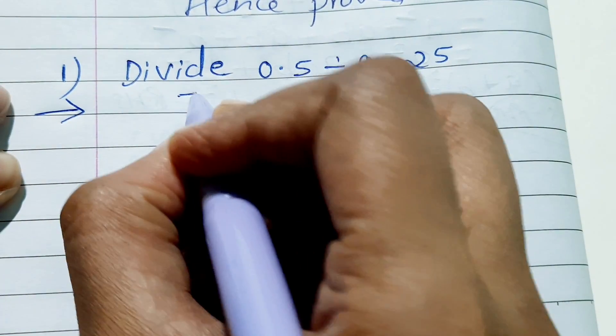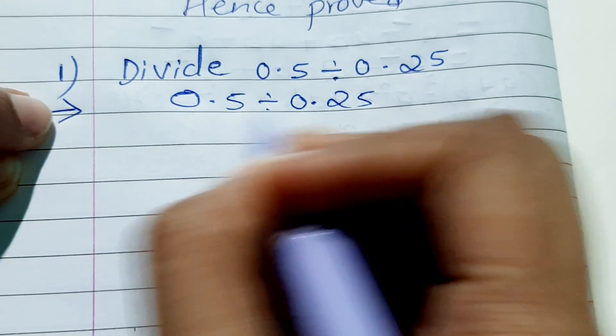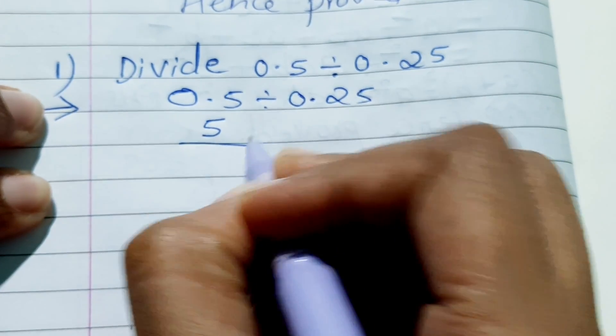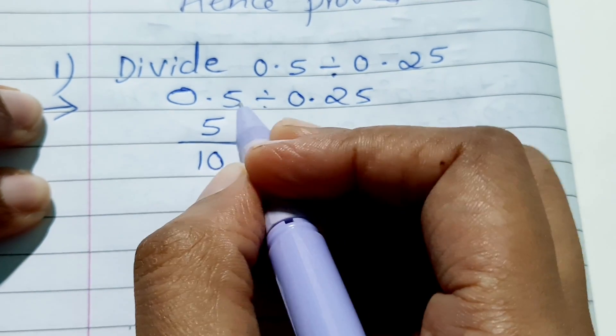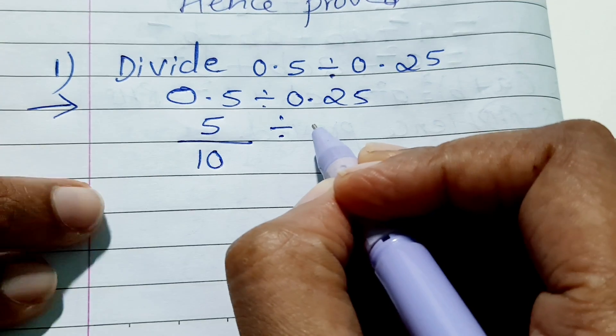First, you'll have to write down 0.5 divide by 0.25. So this is 5 upon 10, because the decimal is in the first place, so it's 5 upon 10.